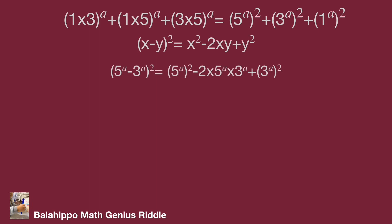We can arrange quantity 5 power of a minus 3 power of a square equal to 5 power of a square minus 2 times 5 power of a times 3 power of a plus 3 power of a square.